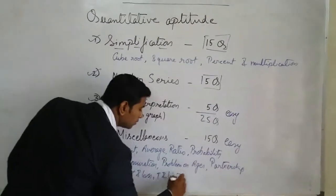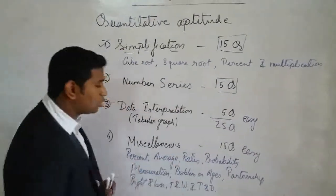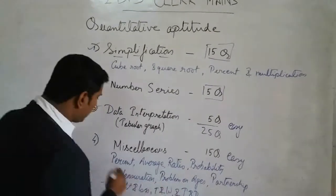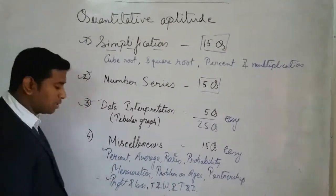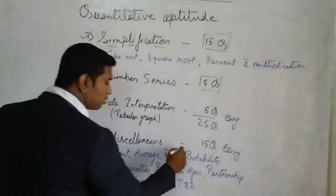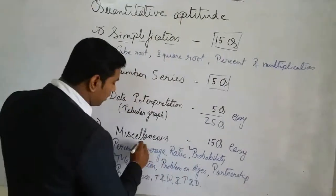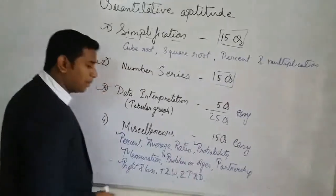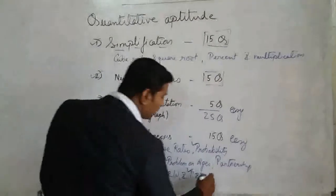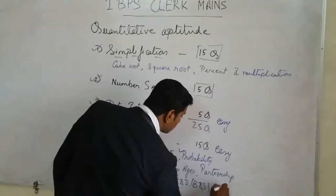Other miscellaneous topics include time and distance. You don't need to prepare every topic — just prepare percentage, profit and loss, mensuration (a very small part), probability with easy questions, average, problem on ages, and time and distance — especially boats and streams, and trains.